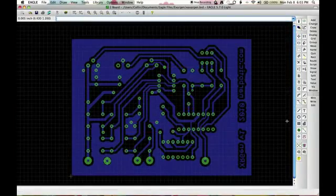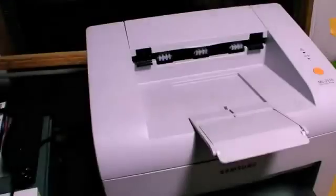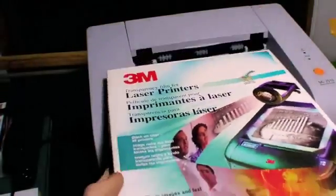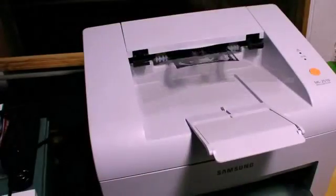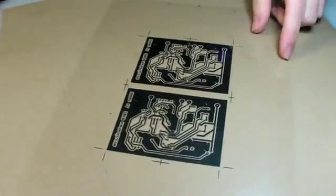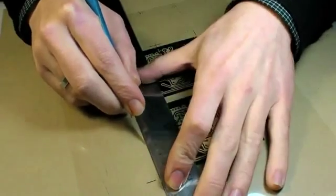The first step in turning it into a real board is printing it out. I've found these overhead projection transparency sheets to work pretty well for this, but I'm still not too impressed by the output of my laser printer. Might be time for a new toner cartridge. Any gaps in the ink can lead to tiny holes in my copper traces, which is not good, but that's why I always print out and cut two copies.